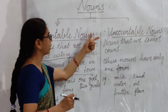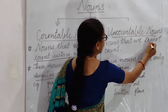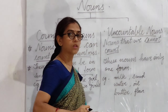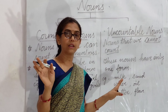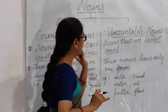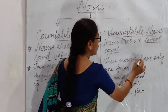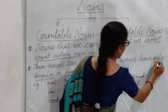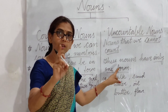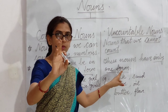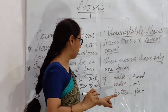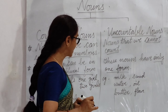Now, uncountable nouns — nouns that we cannot count. Aise nouns jinko hum count nahi kar saktay, jinko hum gin nahi saktay, woh uncountable nouns hoate hain. These nouns have only one form — inki ek hi form hoti hai. Inki hum plural nahi bana saktay. Let's see the examples.